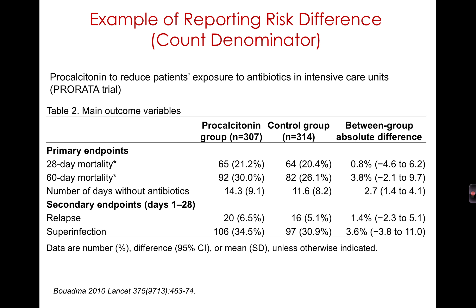An example is this randomized trial of procalcitonin to reduce patients' exposure to antibiotics in intensive care units. Looking at the primary endpoint of mortality: out of the procalcitonin-treated group, out of 307 patients at risk, 65 died within 28 days, giving a 21% risk of death. The control group, among 314 in the denominator, 64 died, giving a 20.4% risk of death. Subtracting 20.4% from 21.2%, the risk difference is 0.8%.